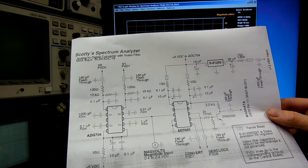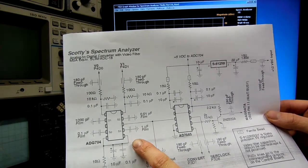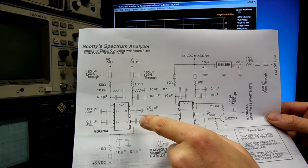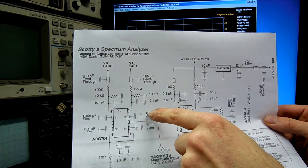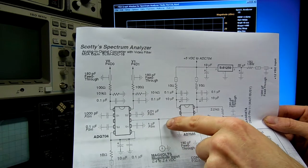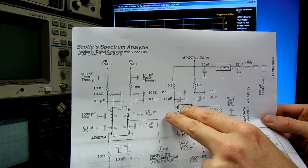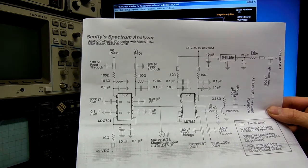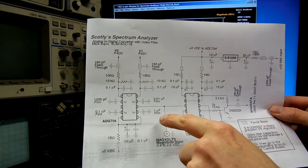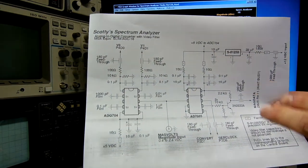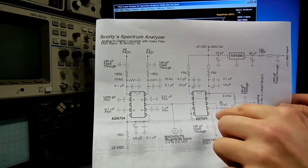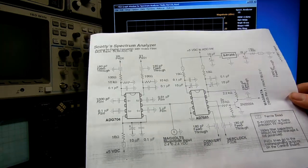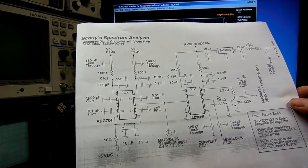On my particular analog-to-digital converter, I have an optional video filter. This is based around the analog device's ADG704 four-channel multiplexer. Using standard 5-volt logic levels, you can switch in one of four different value capacitors in parallel with the magnitude voltage input. Combined with the series resistor back in the logarithmic detector stage, this forms a low-pass filter which can be used to clean up the noise on the magnitude voltage line. This is handy for low noise or low power situations to help make a signal stand out. It's optional and not really needed for the overall spectrum analyzer to work, but it's just a handy feature you might want to add.